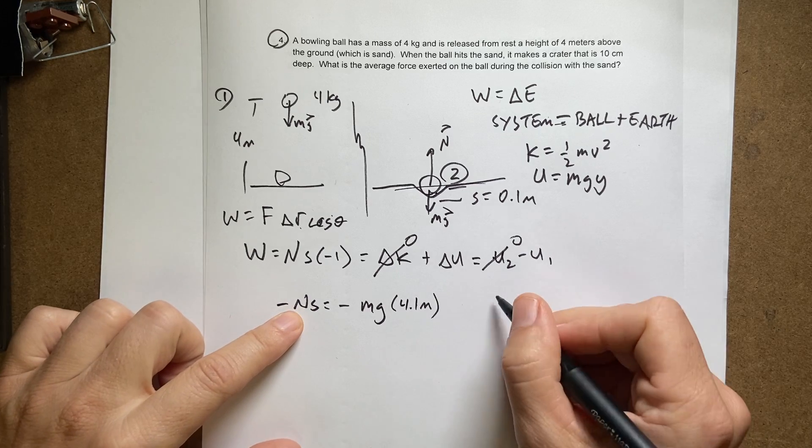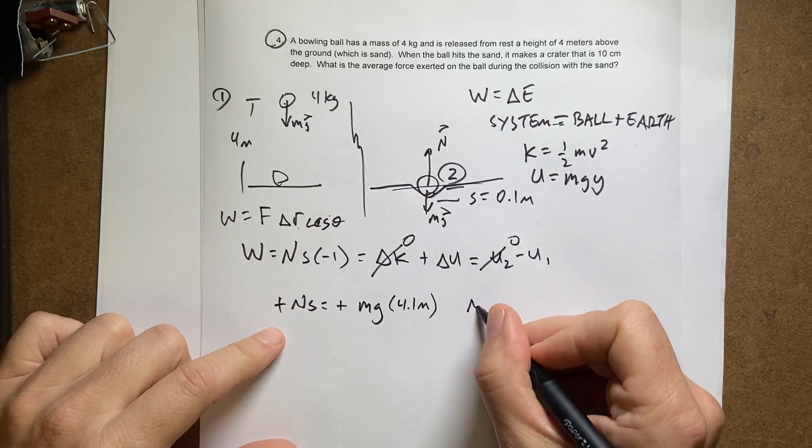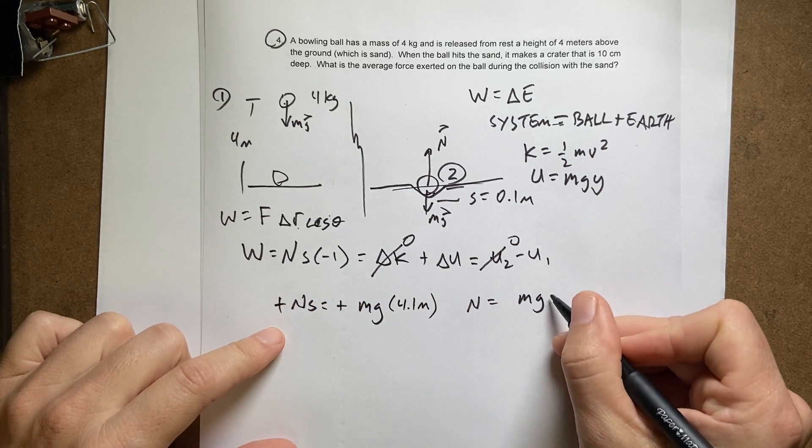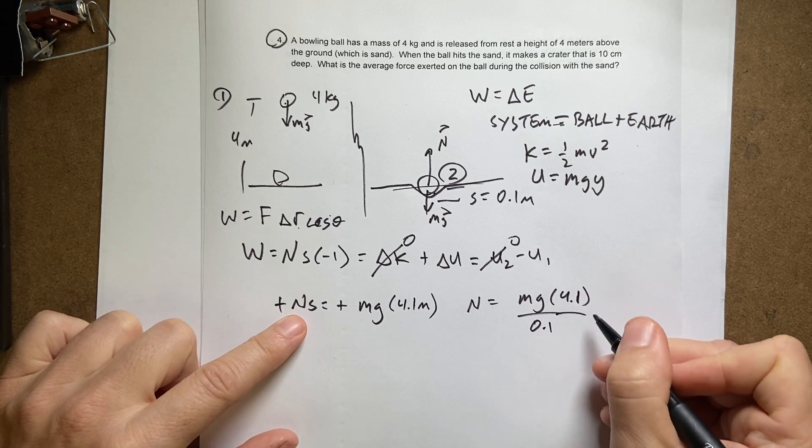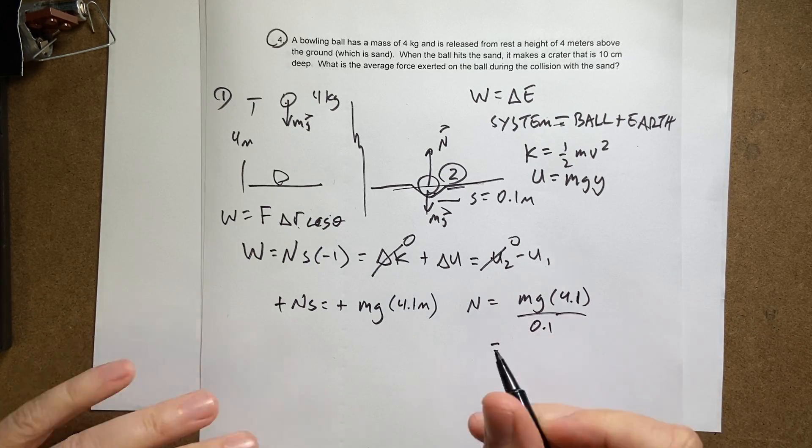So now I can solve for N. The negatives cancel. I get N equals M times G times 4.1 over S of 0.1. And let's just put this in my calculator.